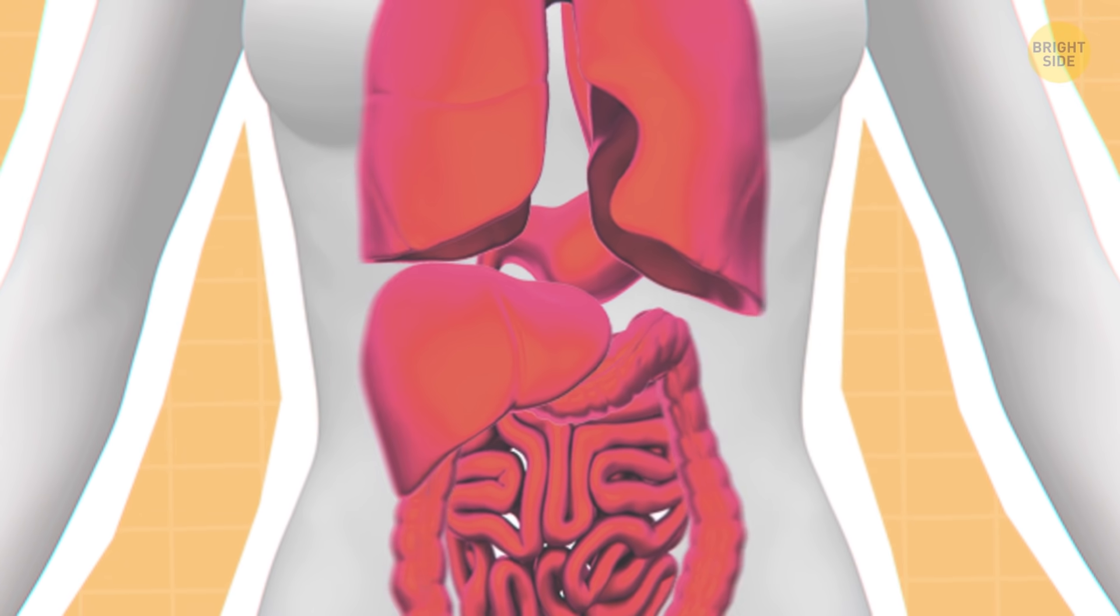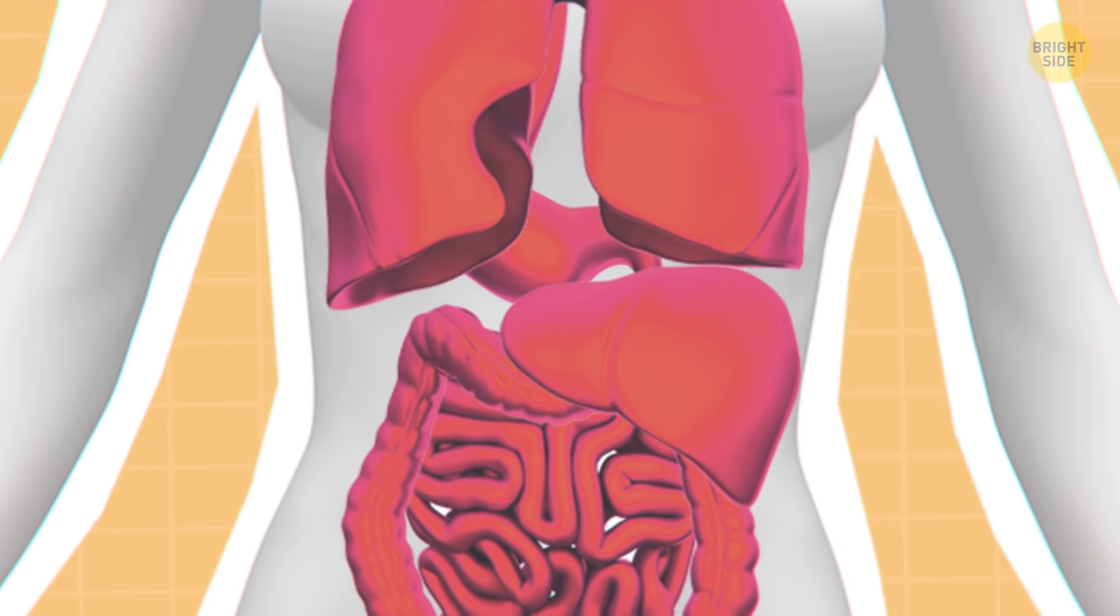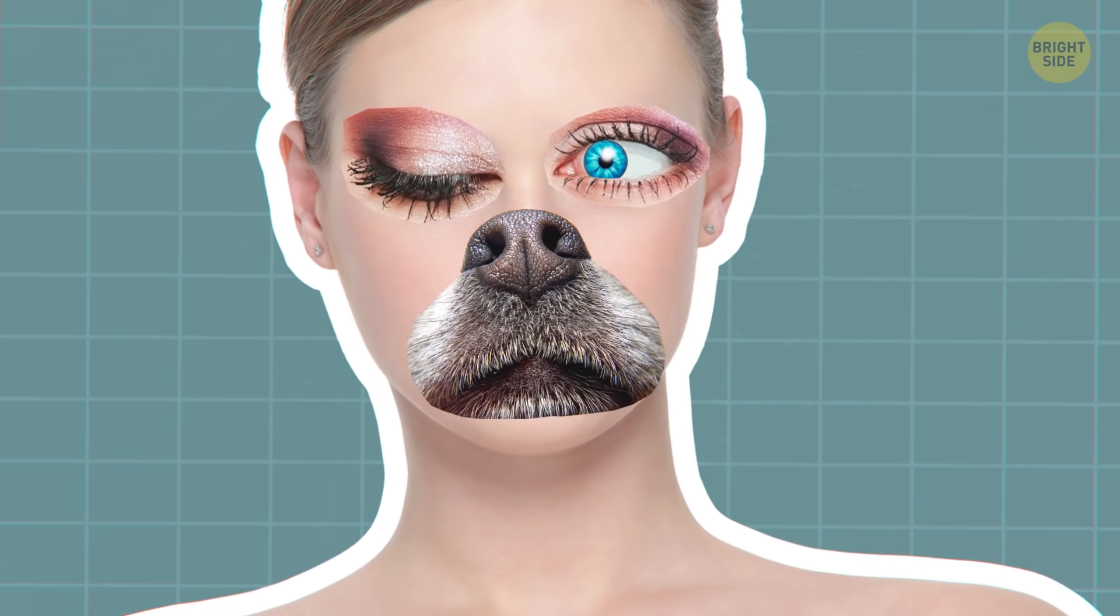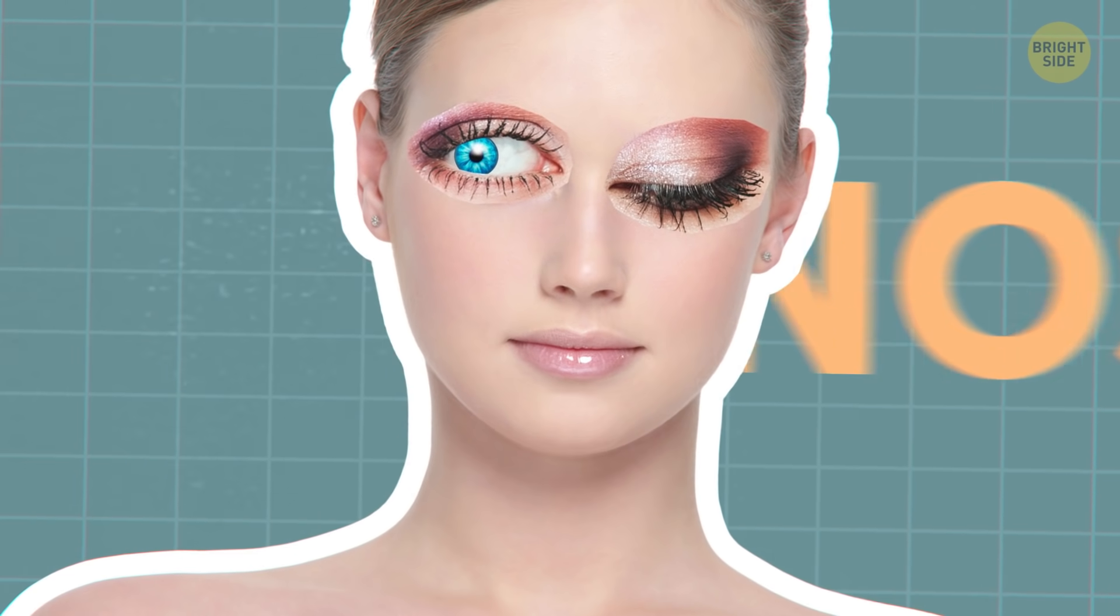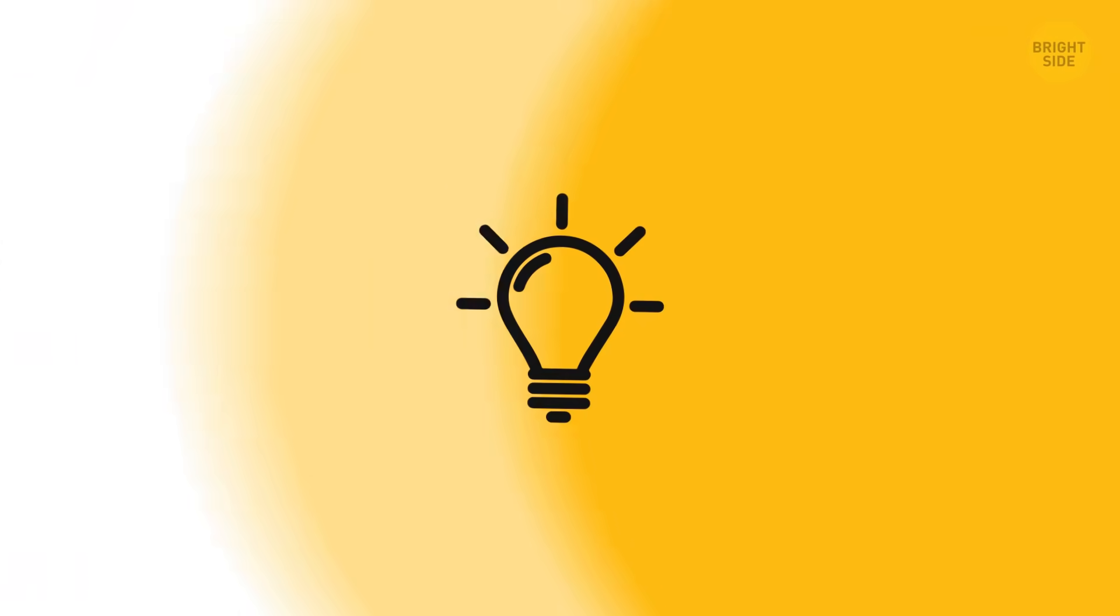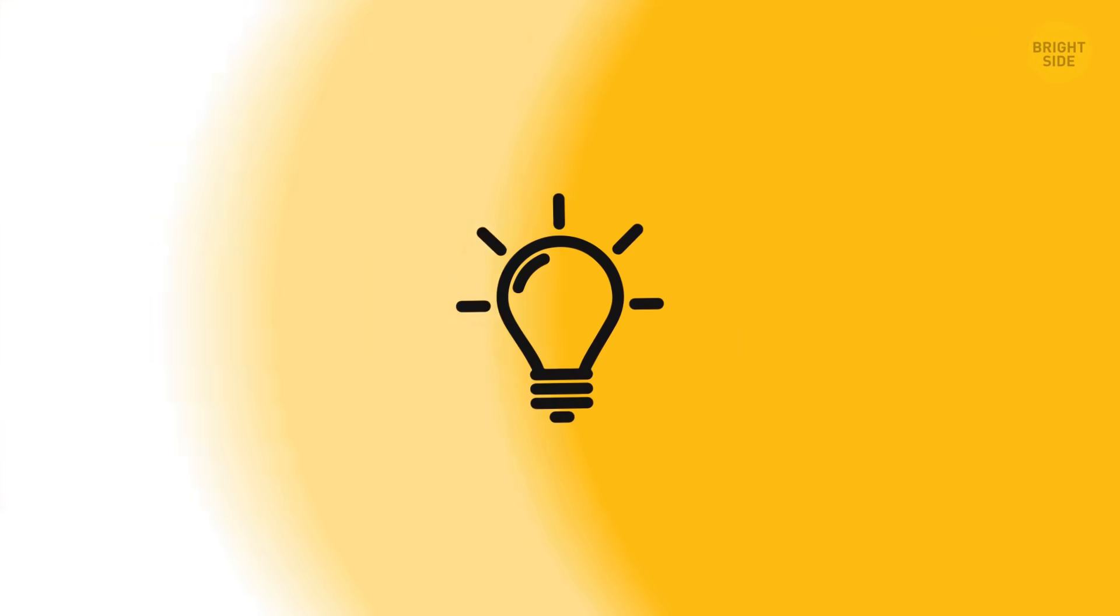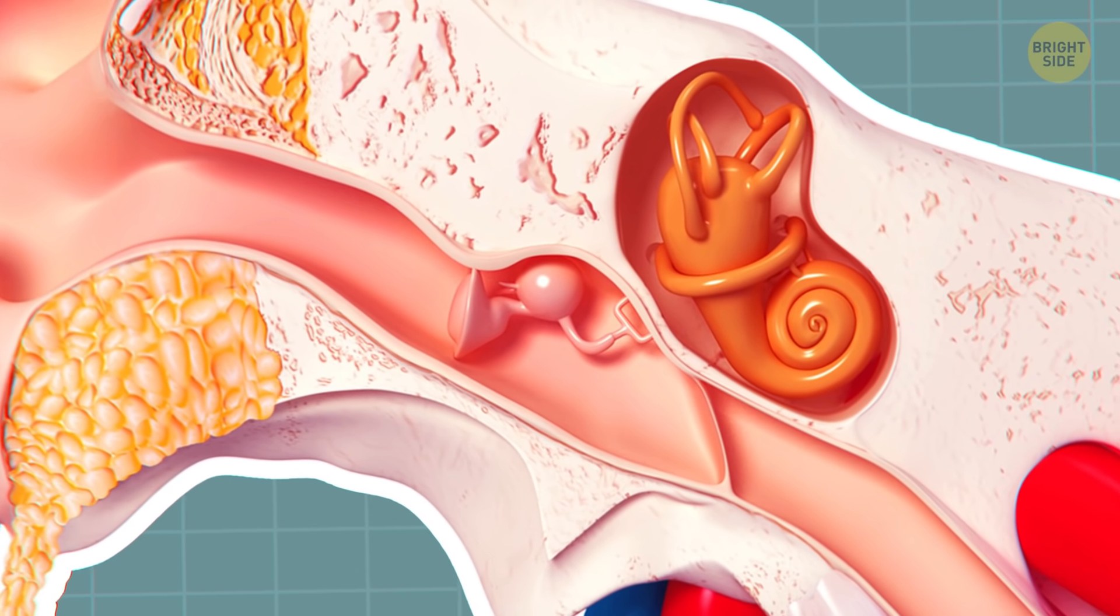1 in 10,000 are born with reversed organs, so all that will be flip-flop with them. 1 in 10,000 are also born without a sense of smell, called anosmia. Must make mealtime a real bummer. 80% of your sense of taste comes from what you're smelling. The smallest bones and muscles are in the inner ear.